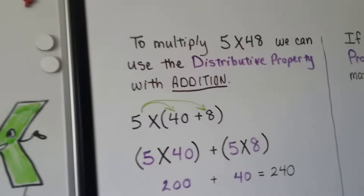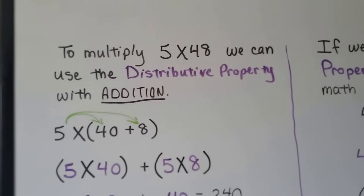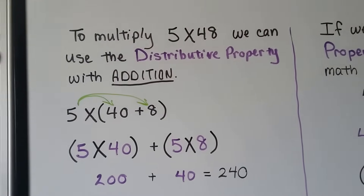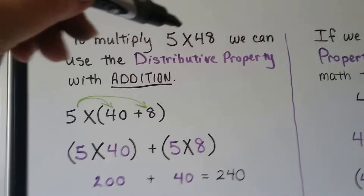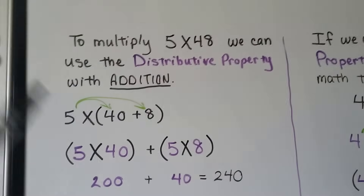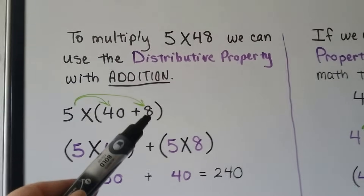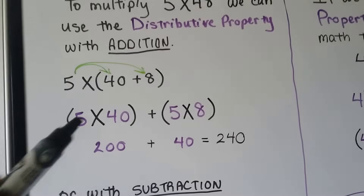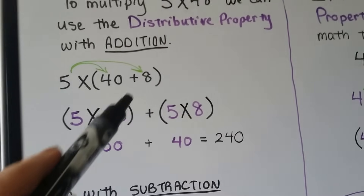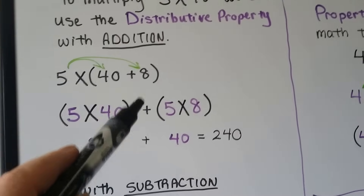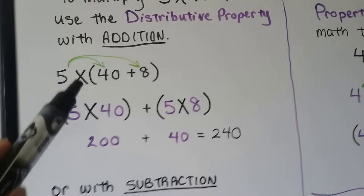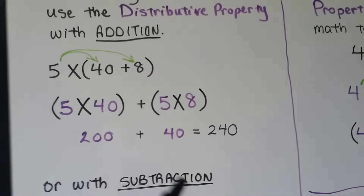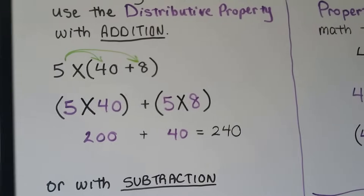To multiply 5 times 48, we can use the distributive property with addition. We break 48 into 40 plus 8. Then we multiply 5 times 40 to get 200, and since there's an addition sign in between, we add 5 times 8, which is 40. We add 200 plus 40 and get 240.